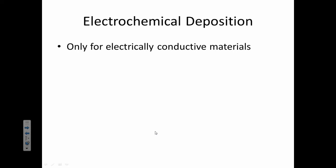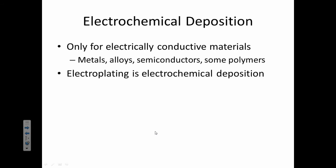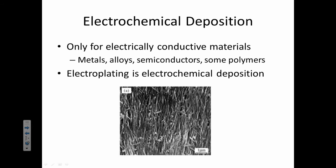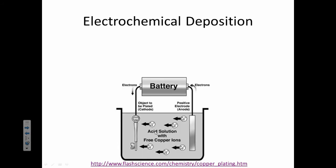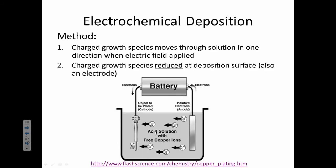The one that we're going to focus on out of all of these is electrochemical deposition. You can only do this for things that conduct electricity, so metals, alloys of metals, semiconductors, and some polymers do work for this. Here's an example of something that was made using electroplating.